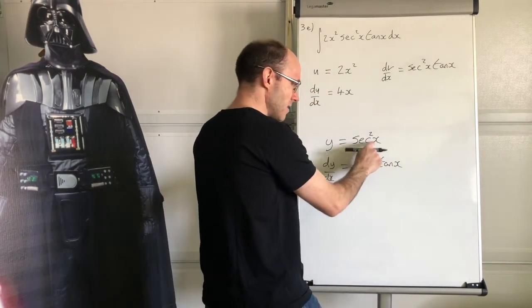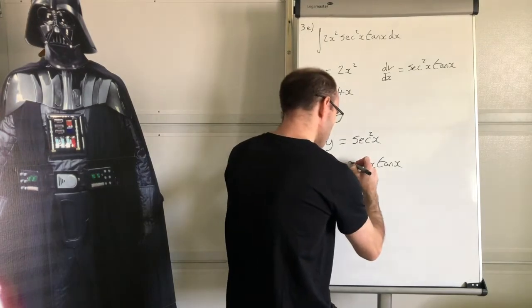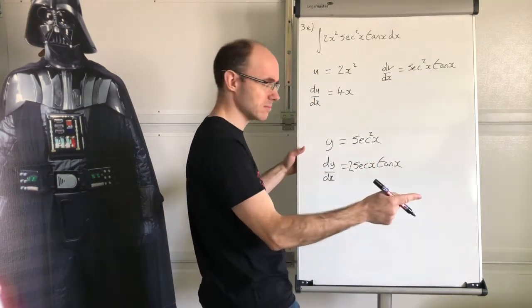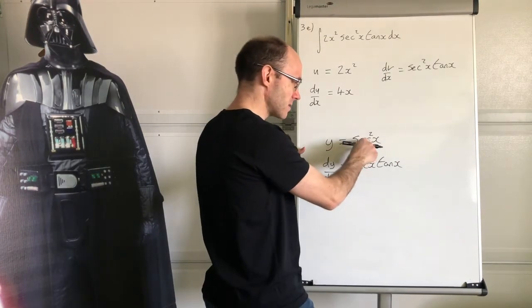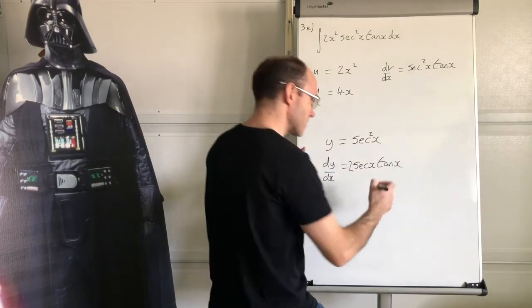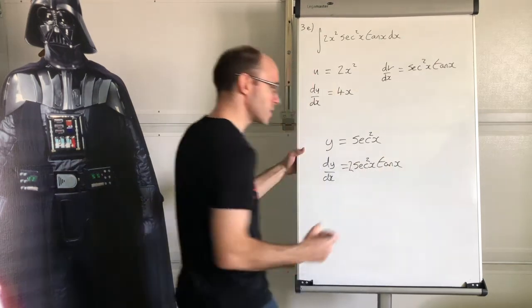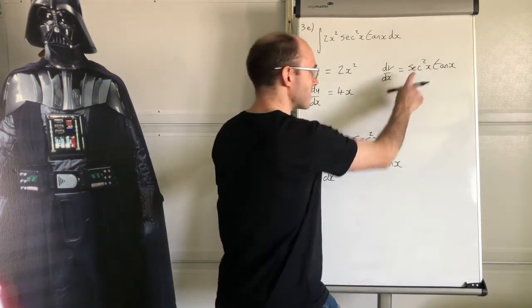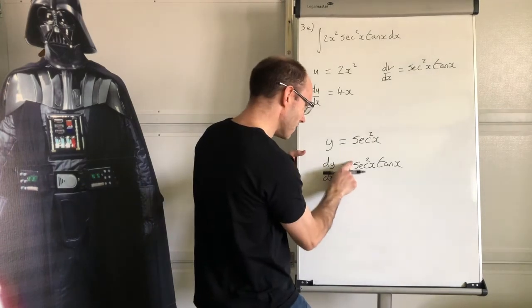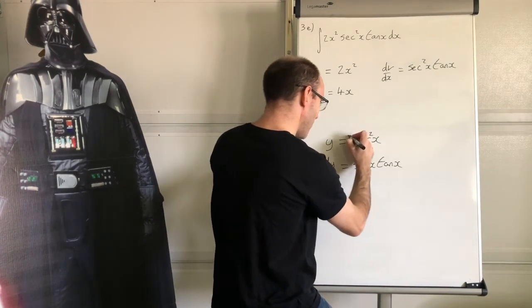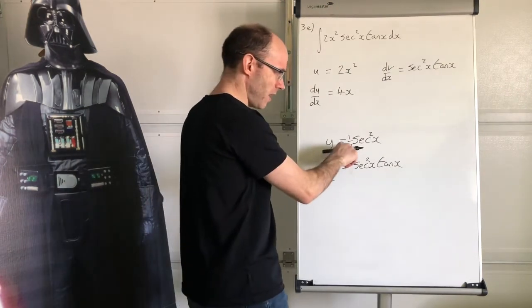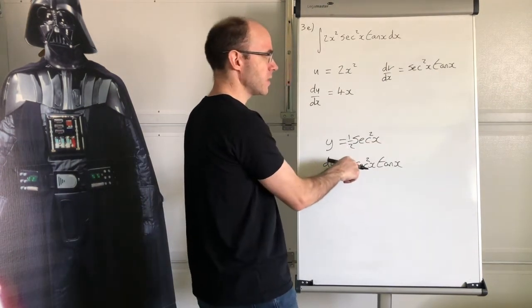Now differentiate that. So you get two, let's put a two in there, sec x times sec x tan x. Two sec x times the derivative sec x tan x. So that's going to be two sec squared x tan x. See how it works. So in order to get this here, if I just halve that, and hence halve this as well, then that will work. The derivative of half sec squared x is sec squared x tan x.